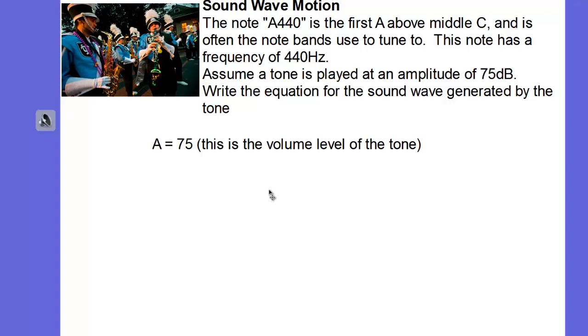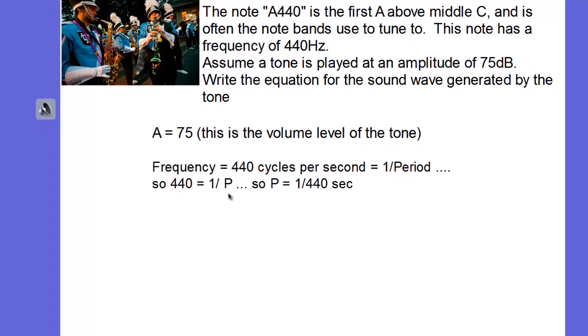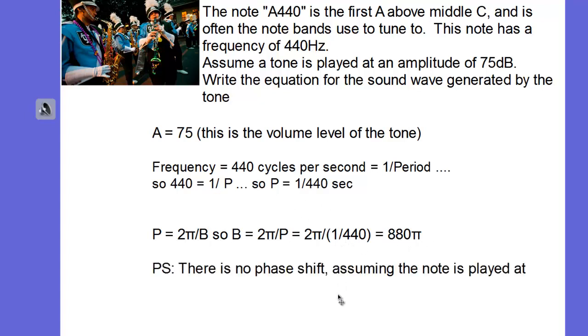Well, we're told that the amplitude is 75 decibels. That's the volume level, essentially, of the tone. And the frequency is 440 cycles per second. Frequency is the reciprocal of period. 440 is equal to 1 divided by P. So the period is actually 1/440th of a second. If you were to really look at the wave generated by A440, you would see that it makes a complete cycle in 1/440th of a second. So period is also equal to 2π over B in the equation we're going to generate. So B is equal to 2π over P. Therefore, B is equal to 2π divided by 1/440th, which is 880π. And there's no phase shift, assuming the note is all played at the beginning of our cycle.